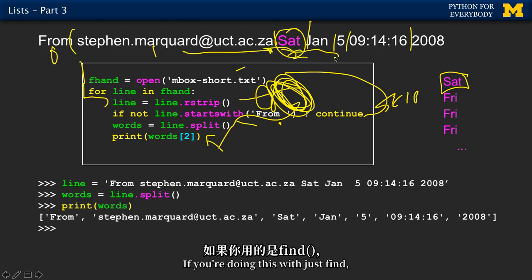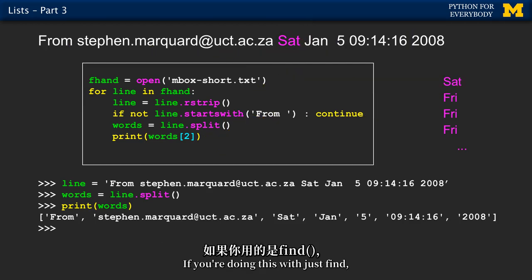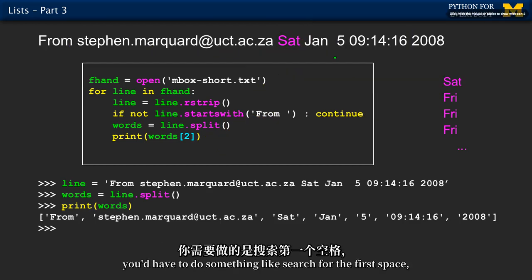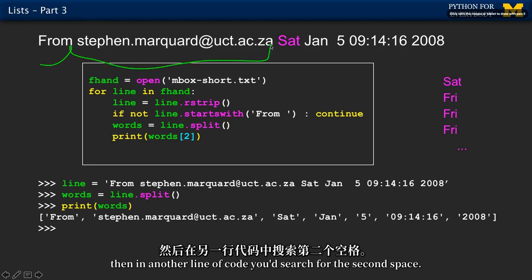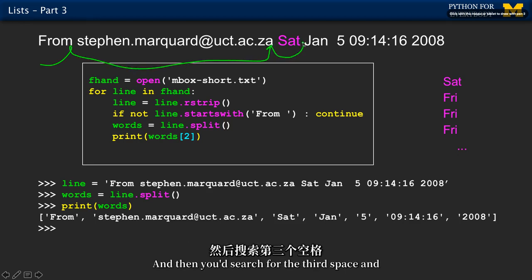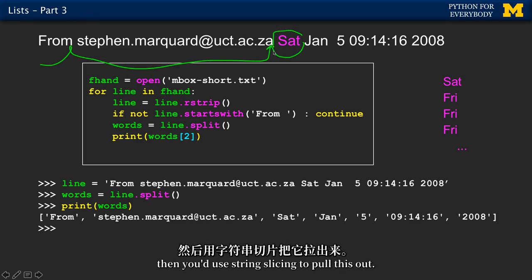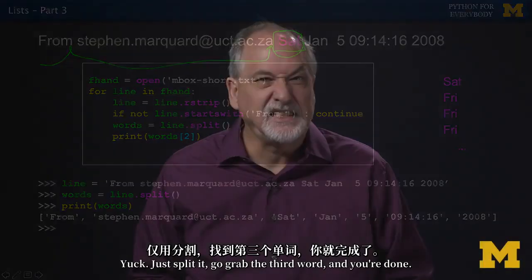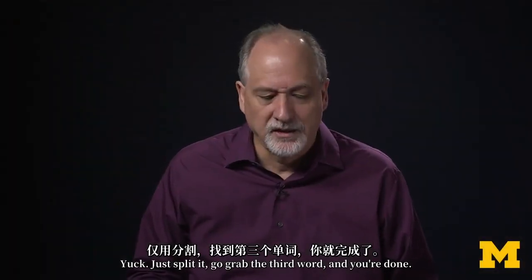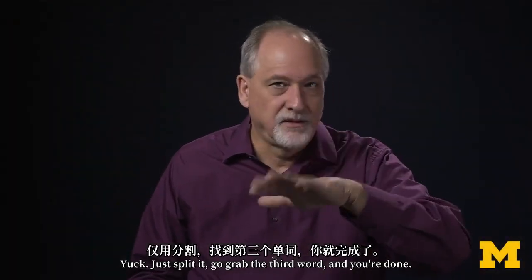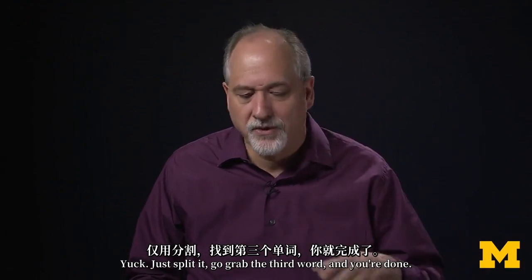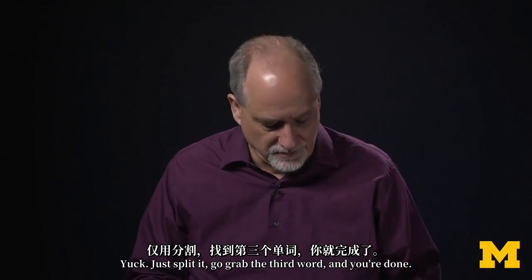We don't have to search for a space or search for another space. If you were doing this with just find, you'd have to search for the first space, then in another line search for the second space, then the third space, and then use string slicing to pull it out. Yuck - just split it, grab the third word, and you're done.